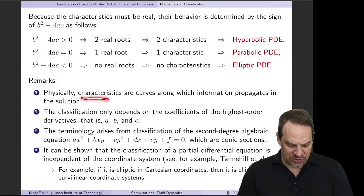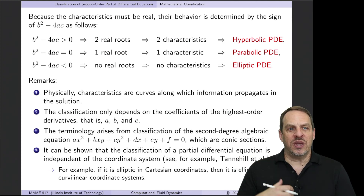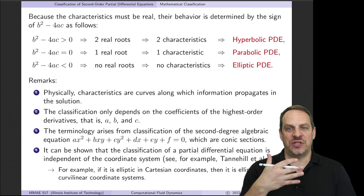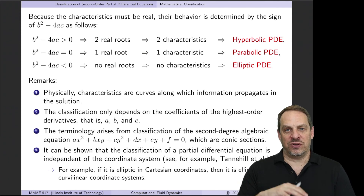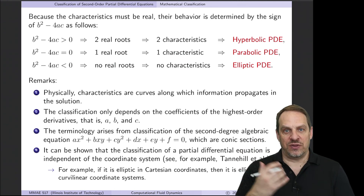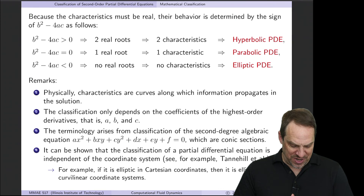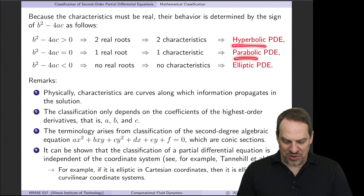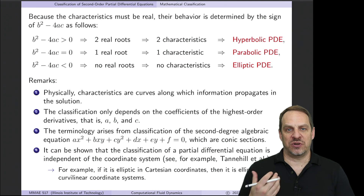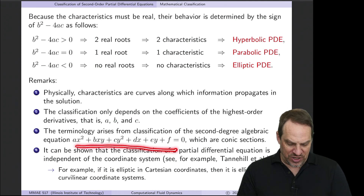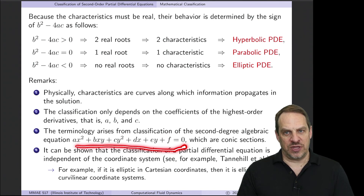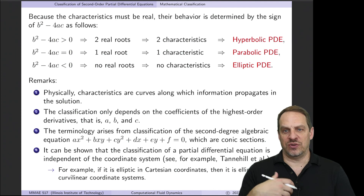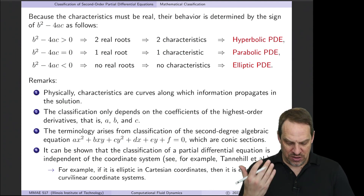Physically, characteristics are curves along which information propagates, and that's the important thing about this mathematical classification that carries over into the numerical solution techniques — those techniques must be faithful to the mathematical nature of these solutions. Notice that the classification only depends on the coefficients of the highest-order derivatives: A, B, and C, not the lower-order derivatives. The terminology hyperbolic, parabolic, elliptic comes from the conic sections in calculus for algebraic equations of that form — and that's all. There's no further carryover in terms of shapes or intuition.